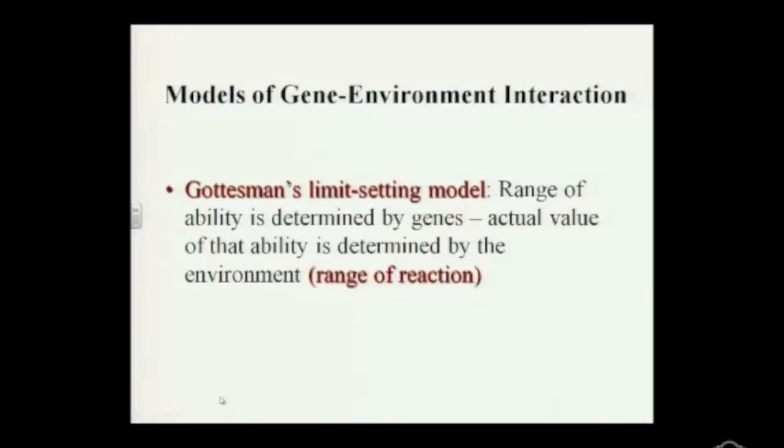Gottesman's limit-setting model proposes that your genes are going to set the limit. A child who has genes for five foot six is not going to be a seven foot tall basketball player regardless of how many Wheaties you have in the morning. So there will be a ceiling on your potential, but there's also going to be a floor level. For example, a child with Down syndrome would normally have an IQ between 70 and 80, but with a stimulating environment that could rise to 85 or 90.